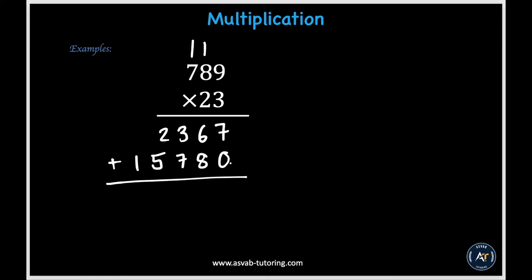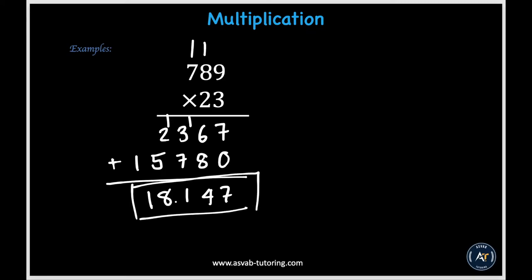Now all there's left to do is add all these numbers together, making sure they are aligned by place value. So 7 plus 0 in the ones place gives us 7. In the tens place, 6 plus 8 gives us 14; we put down 4 and carry over 1. In the hundreds place, 1 plus 3 plus 7 gives us 11; put down 1 and carry the 1. In the thousands place, 1 plus 2 plus 5 gives us 8. And we have a remaining 1 in the ten-thousands place. So our final answer ends up being 18,147.